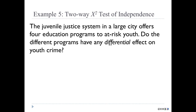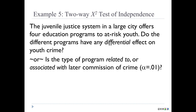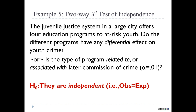Let's say the juvenile justice system in a large city offers four educational programs for at-risk youth. Do the different programs have any differential effect on youth crime? This sounds like association. If measuring with categorical variables, we're looking at the chi-square test of independence. Is the type of program related to or associated with later commission of crime by the students? Let's say alpha is 0.01 and both variables are categorical.